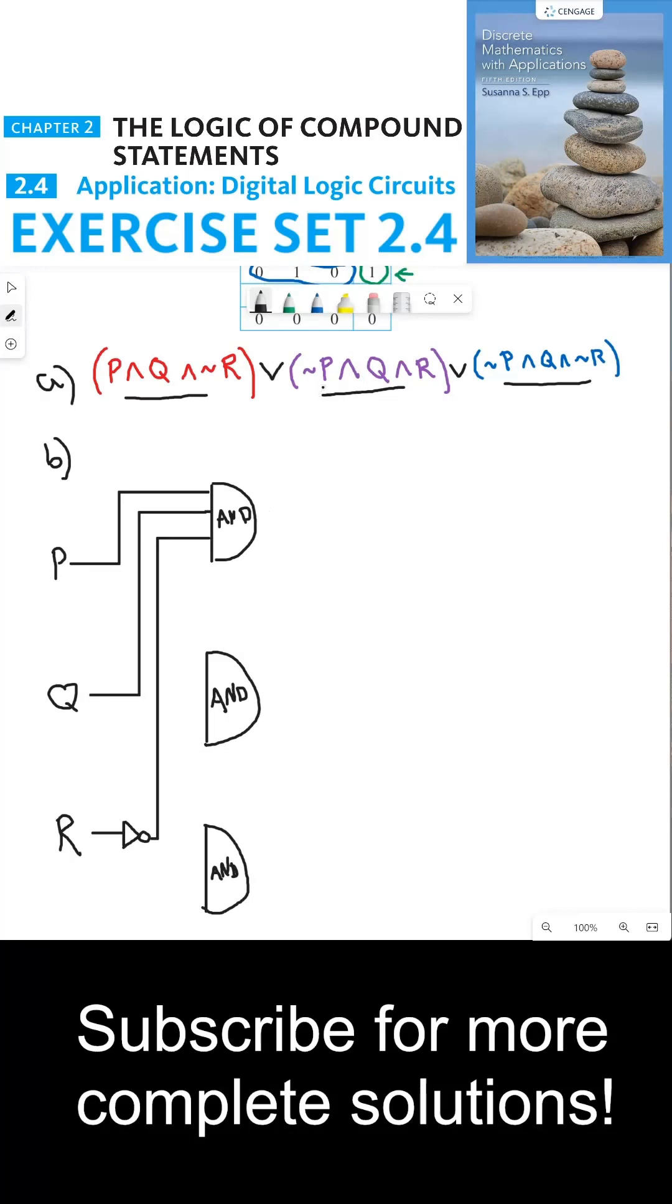My second AND gate, I need NOT P, Q, and R. So first I'm going to split the input signal of Q right here, and feed that into the second AND gate. I'll need the input signal for R. We can't steal it from this spot right here, because right here is technically NOT R, since it's the output of this NOT gate. And so we're going to need to split R at the input before the NOT gate, and then we'll feed that signal into my second AND gate.